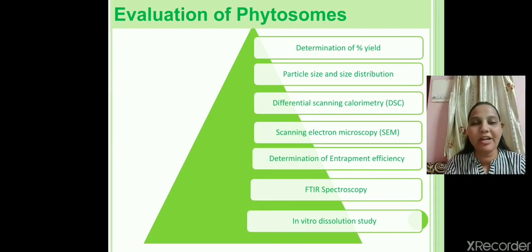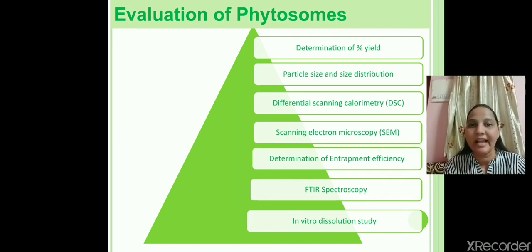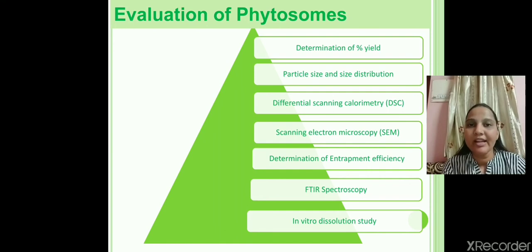Evaluation parameters of phytosomes: first, determination of total yield or percentage yield; second, determination of particle size and size distribution; third, DSC, mainly used for thermal analysis; fourth, SEM, mainly used for identification of outer characterization, microscopical studies, or outer appearance; fifth, percentage of drug entrapment; sixth, FTIR, mainly used for identification of functional groups; and seventh, in vitro dissolution studies.